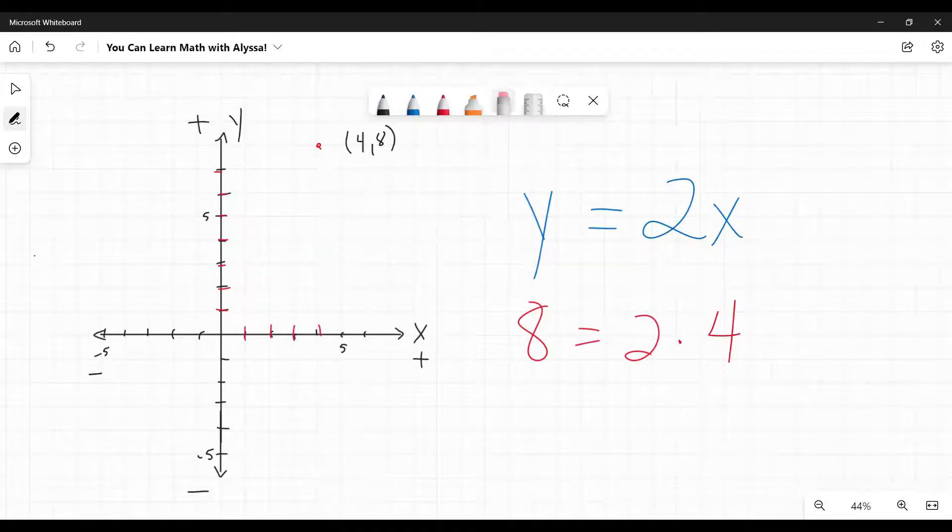Okay. Well, what if I picked another number for x? What if I picked 2 for x? Well, then y would be 2 times 2 or 4. So let's chart that one. 1, 2, and then up 1, 2, 3. There's my point where x is 2, y is 4.